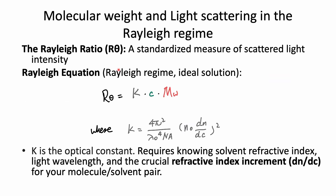Now we understand the basics of Rayleigh scattering. To measure molecular weight, we use an equation called the Rayleigh equation. On the left is the Rayleigh ratio, a standardized measure of scattered light intensity. On the right, there is concentration, weight-average molecular weight, and K — the optical constant. K can be expressed as: K = (4π²n₀²(dn/dc)²) / (Nₐλ⁴), where λ is the wavelength of the incident laser, Nₐ is Avogadro's number, n₀ is the refractive index of the solvent, and dn/dc is the refractive index increment — a measure of how the refractive index changes with concentration of the sample in the solvent. Normally you need to measure dn/dc with a specific instrument.